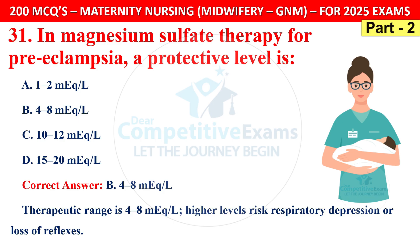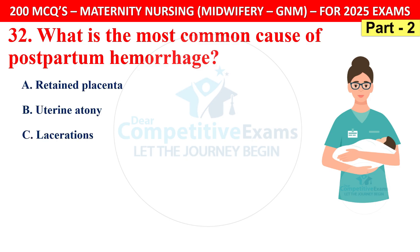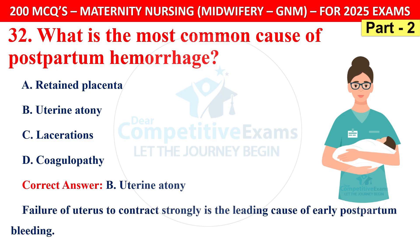Question 32: What is the most common cause of postpartum hemorrhage? The correct answer is B — uterine atony. Failure of the uterus to contract strongly is the leading cause of early postpartum bleeding.